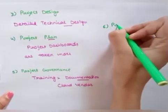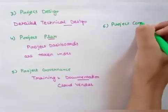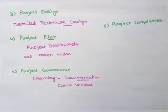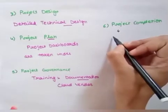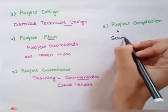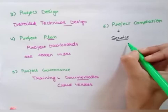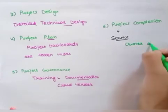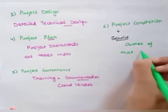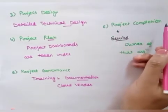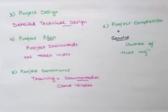The last stage is project completion. In this stage, all the cloud services or all the data of the organization is supplied to the owner of that organization after the migration is complete. So these are the six stages of cloud migration. I hope you liked this video, thank you so much for watching.